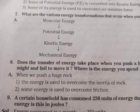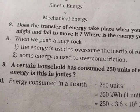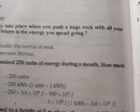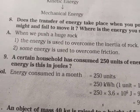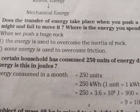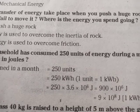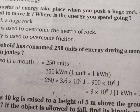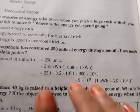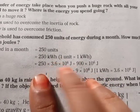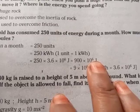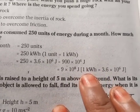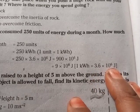9th Question: A household has consumed 250 units of energy during a month. How much energy is this in joules? Answer: Energy consumed in a month = 250 units = 250 KWH. Since 1 unit equals 1 KWH, and 1 KWH equals 3.6 × 10⁶ J, total energy = 250 × 3.6 × 10⁶ J.